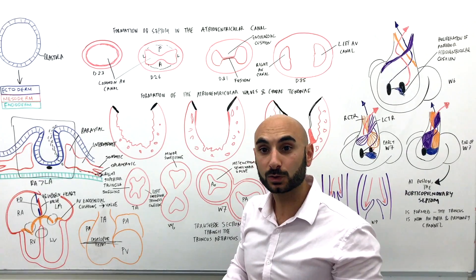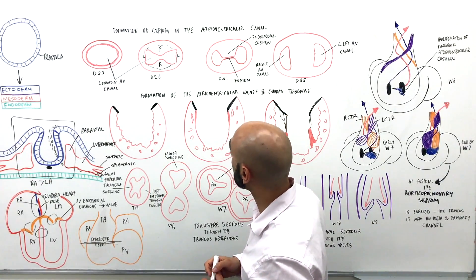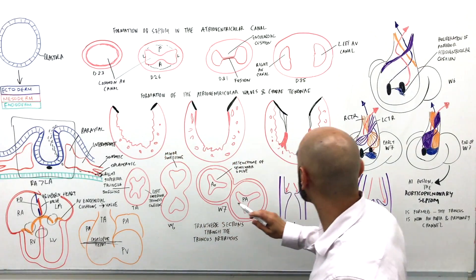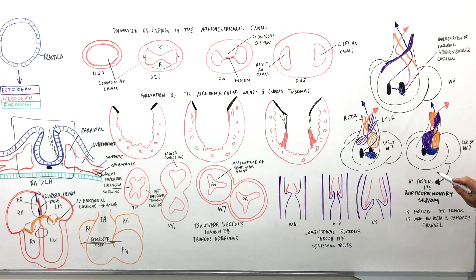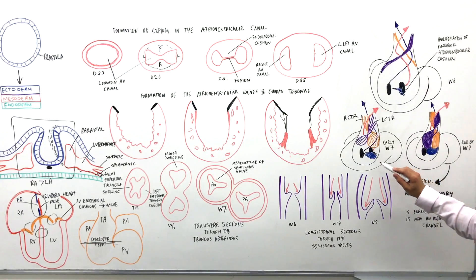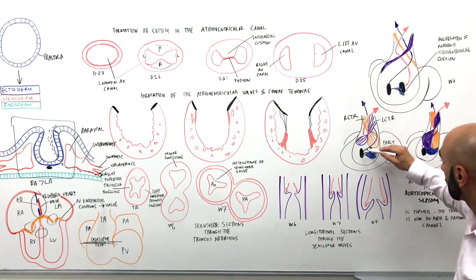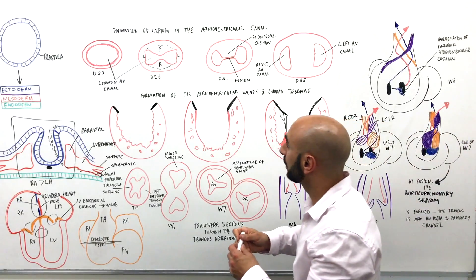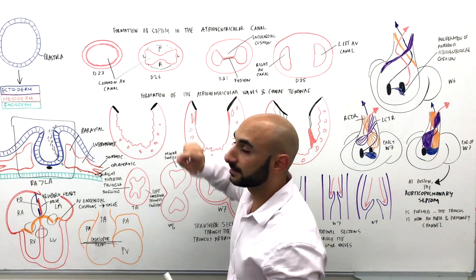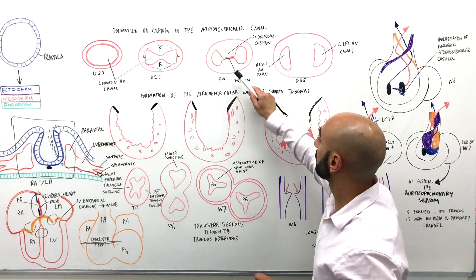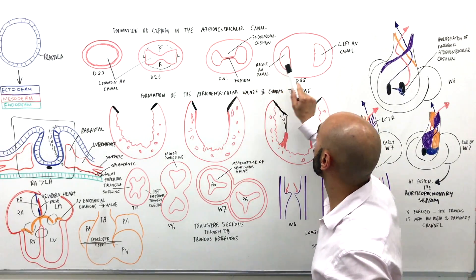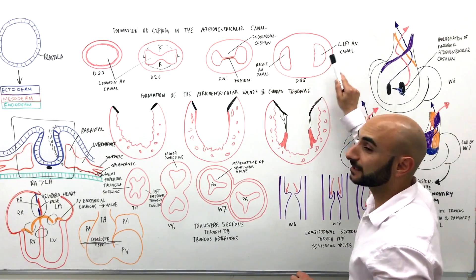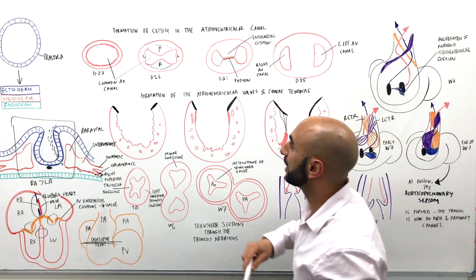And the high-yield points on how it does that is that it's a proliferation of both an anterior and posterior endocardial cushion. The proliferation of the anterior and posterior eventually fuse. They come together and fuse, forming two canals: the right atrioventricular canal and the left atrioventricular canal. And there's also a lateral endocardial cushion.